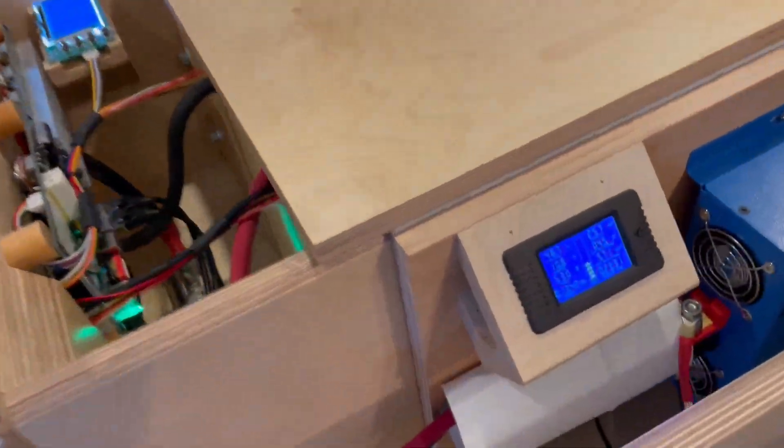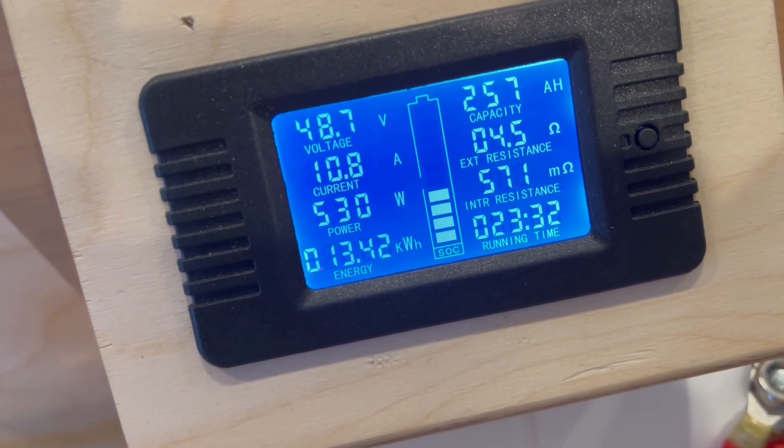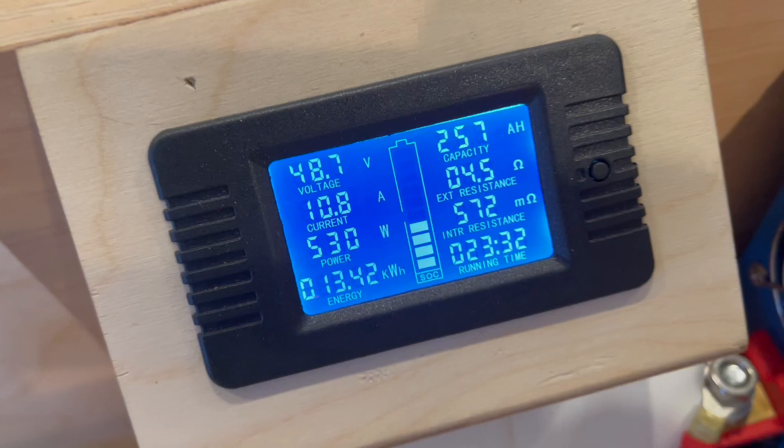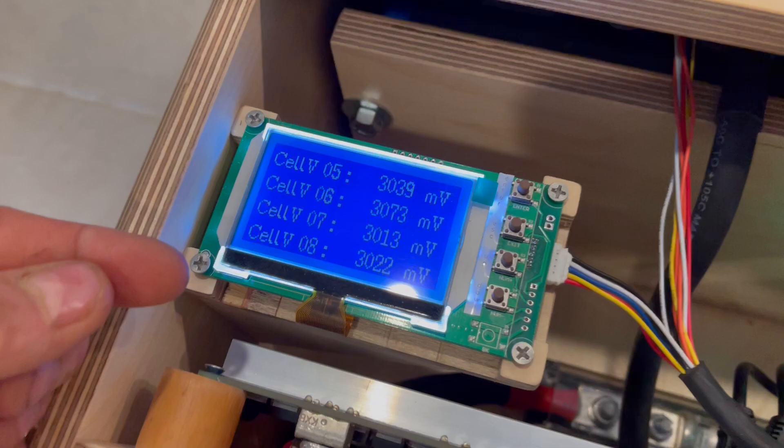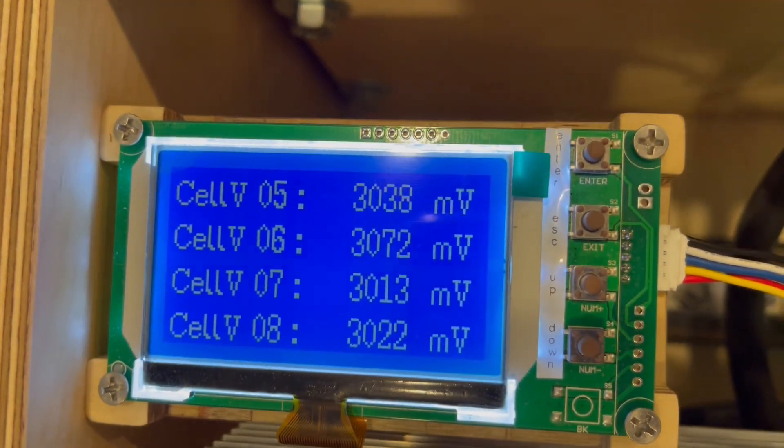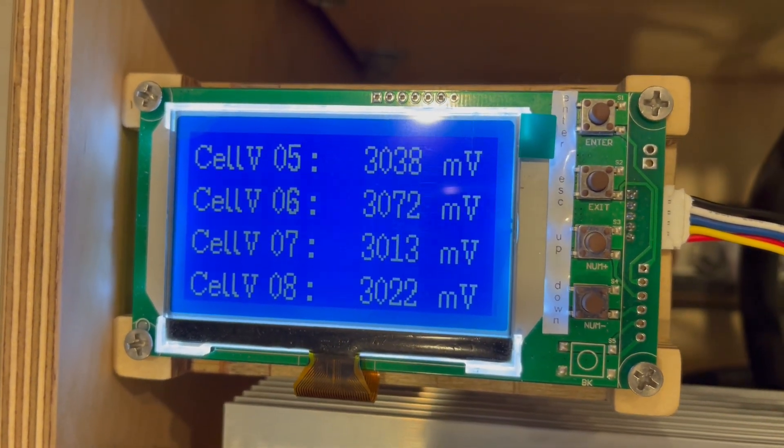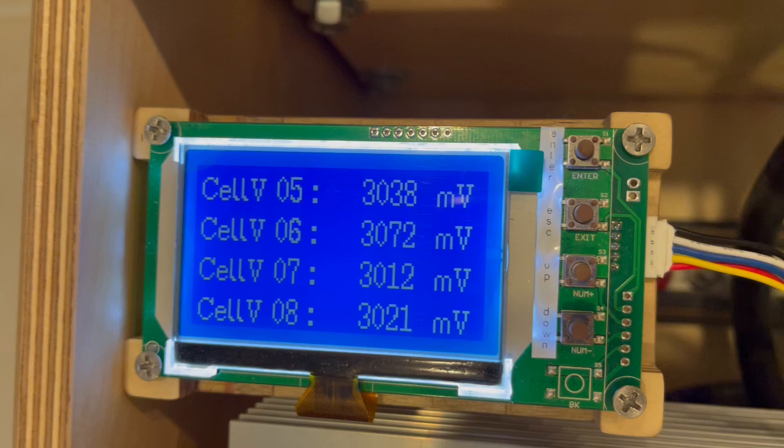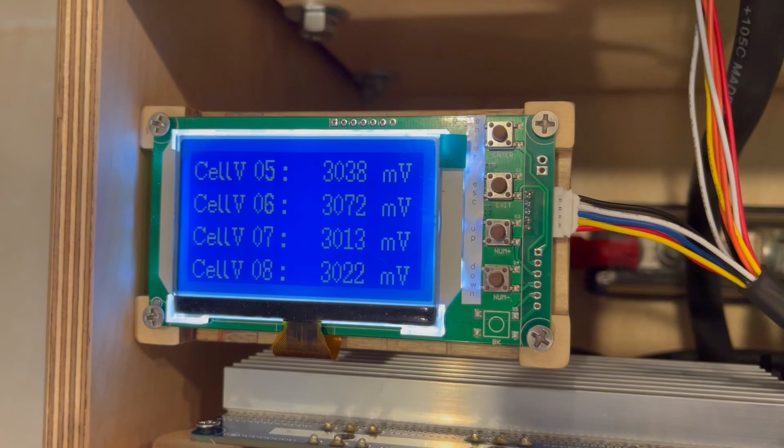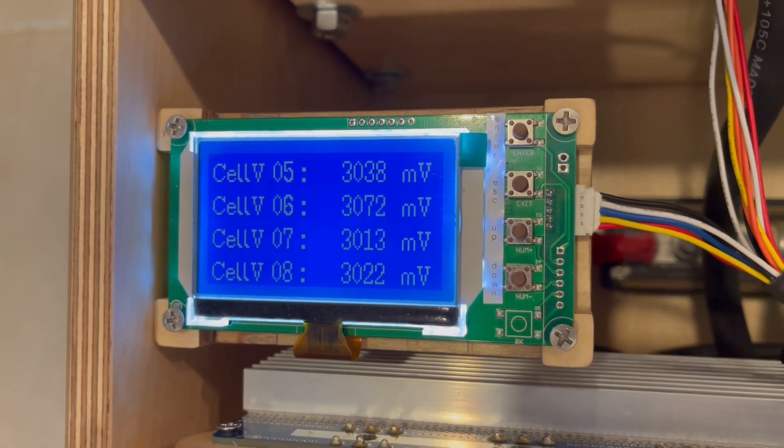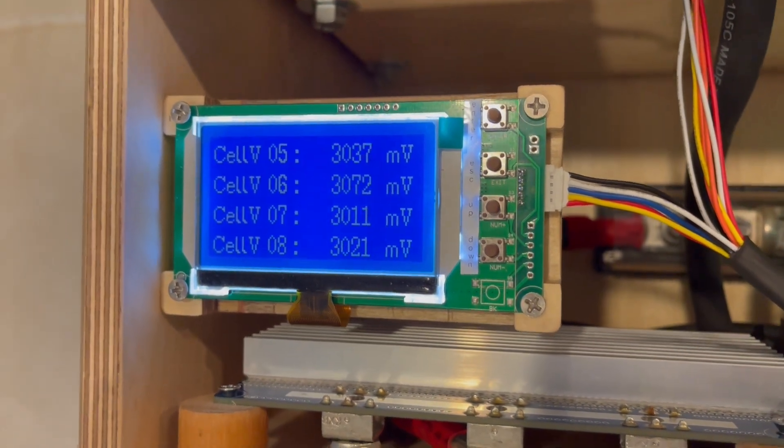So I have so far run 257 amp hours out of this battery, and it's been almost 24 hours, and the lowest cell in this battery is at 3.013 volts. This BMS will cut this battery off at 2,800 millivolts, at 2.8 volts. So it's starting to drop rather quickly.